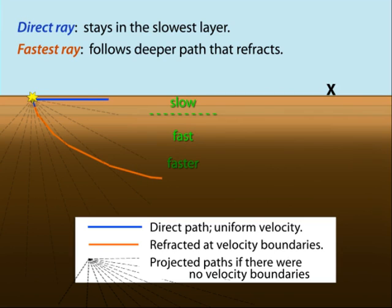The outer path continually refracts as it crosses boundaries of increased velocity until the incident ray reaches a critical angle and begins sending a head wave to the surface.